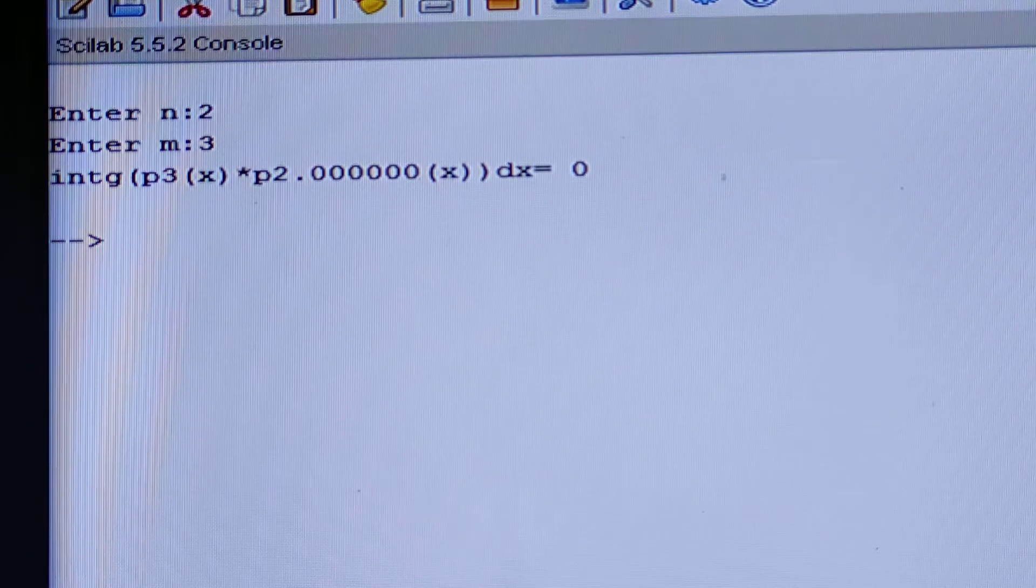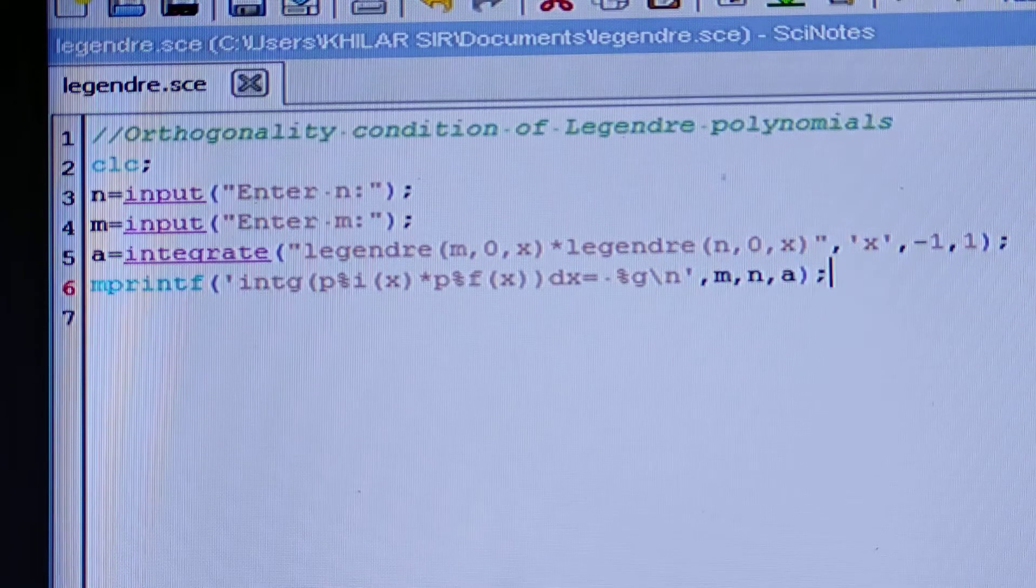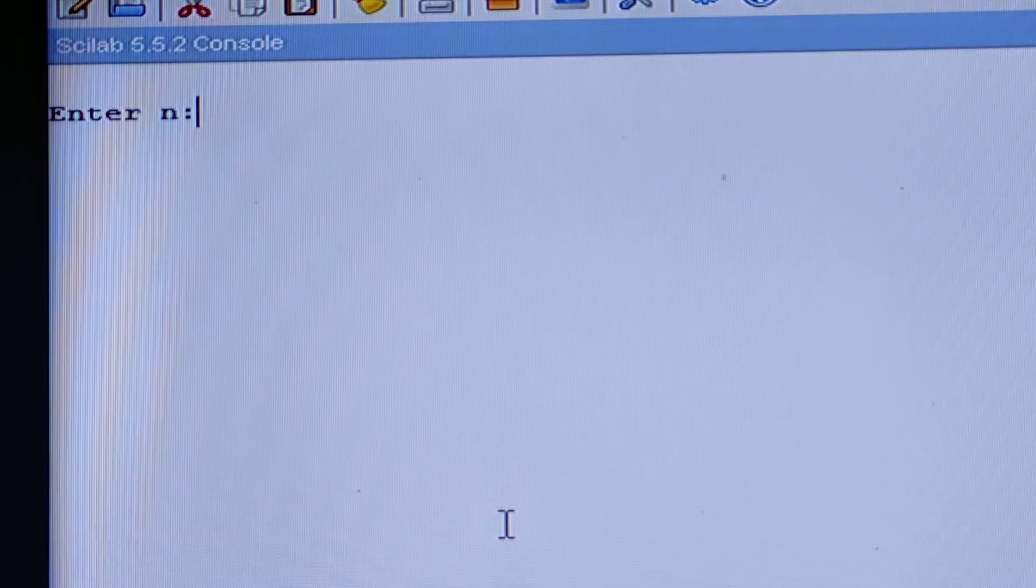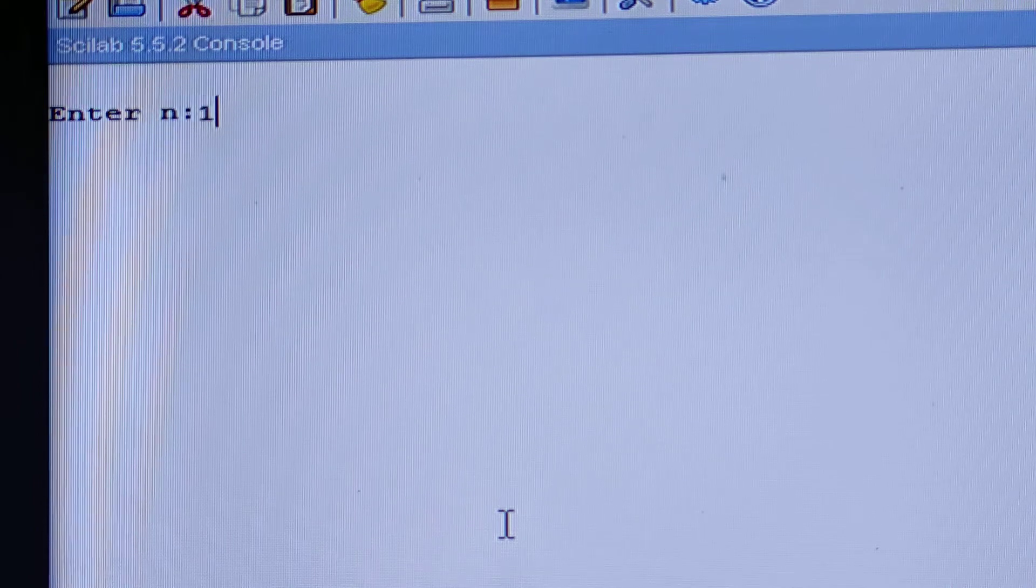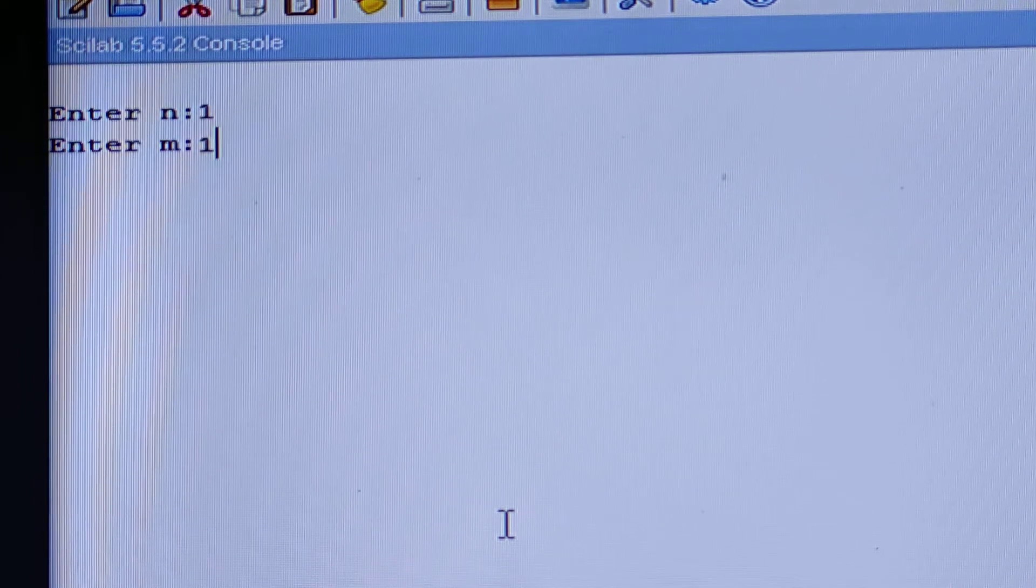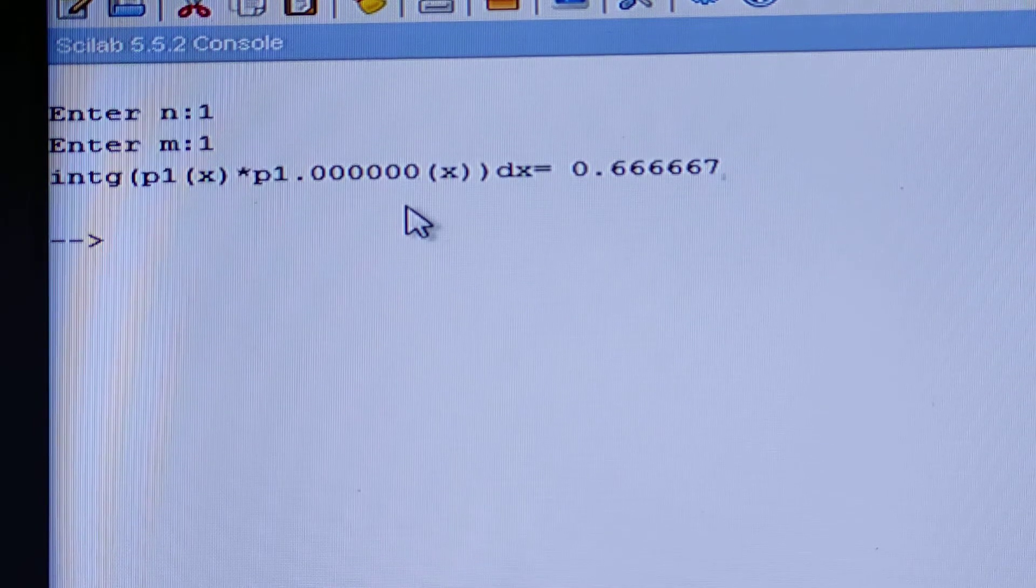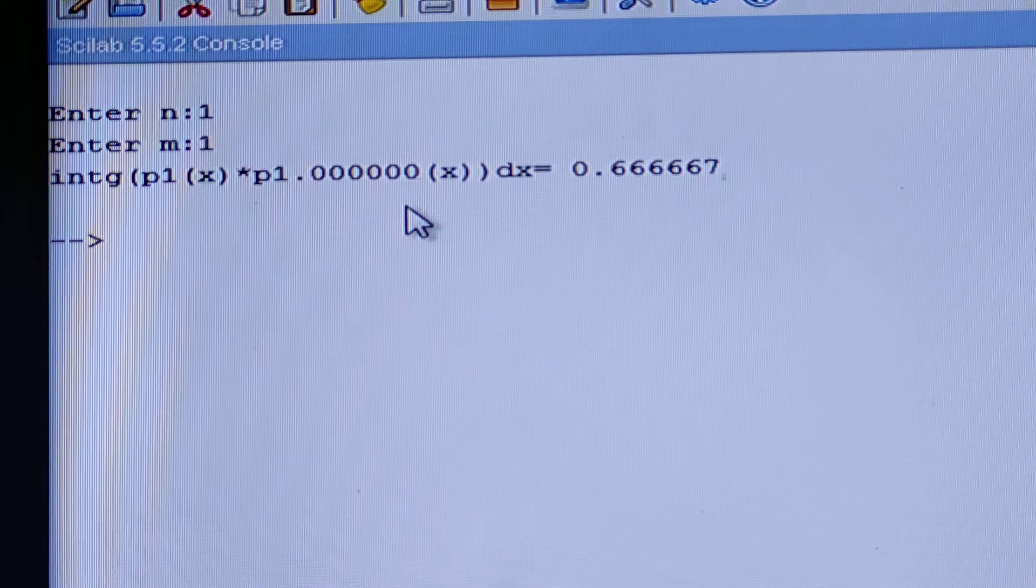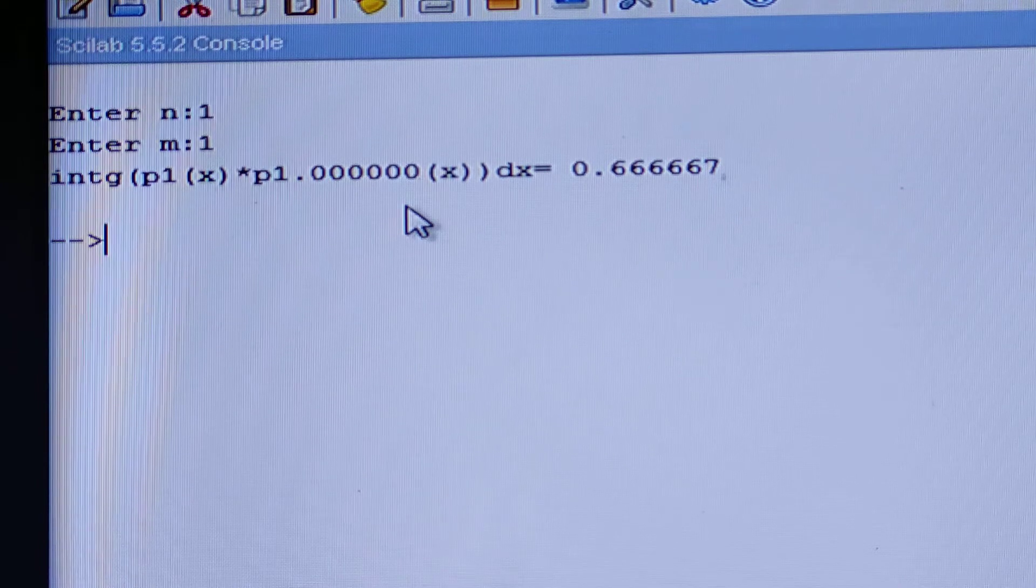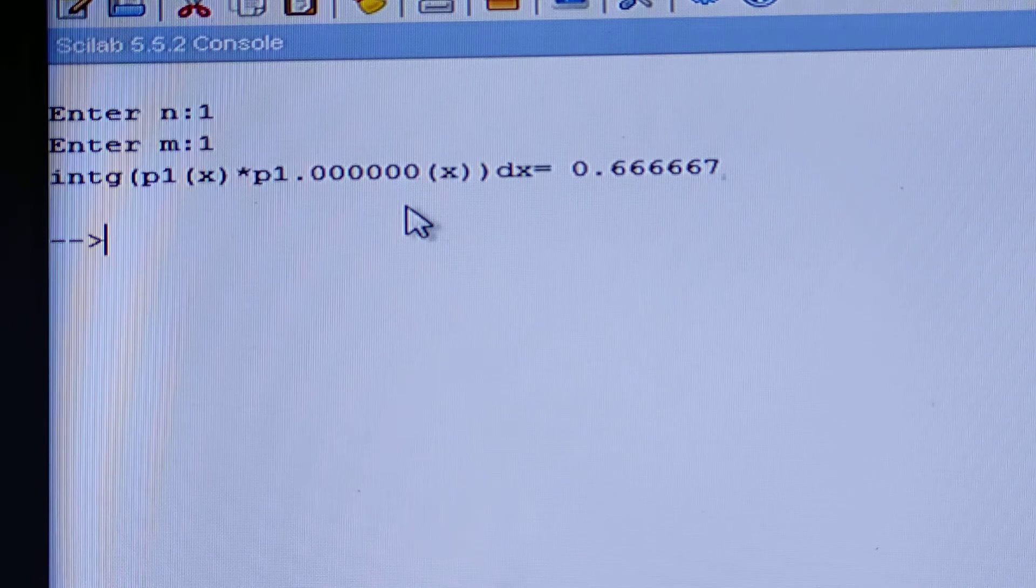So let us execute another case. I am again moving here and you have to execute here again. See, in the console, again it is asking the value of N. Let us put 1, then enter key, then 1, then enter key. Now see, this is the value. Because if M and N are equal, our formula was 2/(2N+1). So N is 1, so 2/3, and it will be equal to 0.666667.